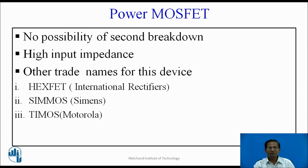There is no possibility of second breakdown because MOSFETs are positive temperature coefficient devices. As the temperature increases, resistance increases and current decreases, so there is no possibility of second breakdown. MOSFETs have high input impedance. Other trade names for this device include HEXFET by International Rectifiers, CMOS manufactured by Siemens, and TMOS manufactured by Motorola.